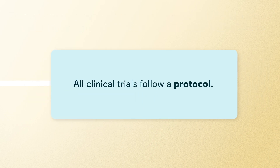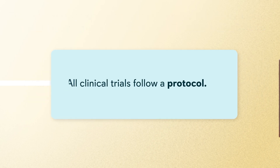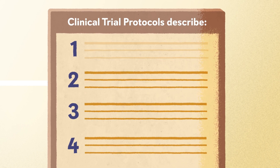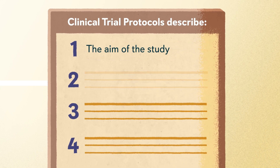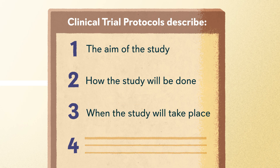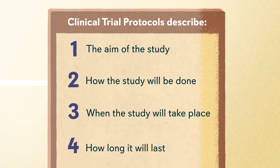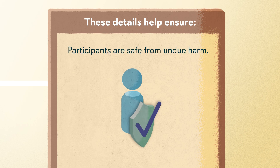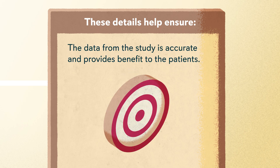All clinical trials follow a protocol. A protocol is a detailed plan for the study that the research team must follow. The protocol describes aspects like the aim of the study, how the study will be done, when the study will take place, and how long it will last. All these details help ensure there is a plan for every step of the clinical trial, that participants are safe from undue harm, and that the data from the study is accurate and provides benefit to the patients.